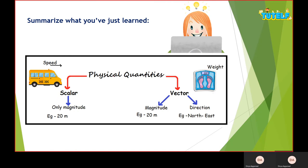To summarize: physical quantities are of two types — scalar and vector. Scalar has only magnitude, such as 20 meters. Vector has both magnitude and direction. Speed is scalar; weight is vector because it is the product of mass and acceleration due to gravity, which acts downward. We have studied speed (scalar), velocity (vector), distance (scalar), and displacement (vector). As we go through more chapters, I'll keep telling you whether each new quantity is scalar or vector.